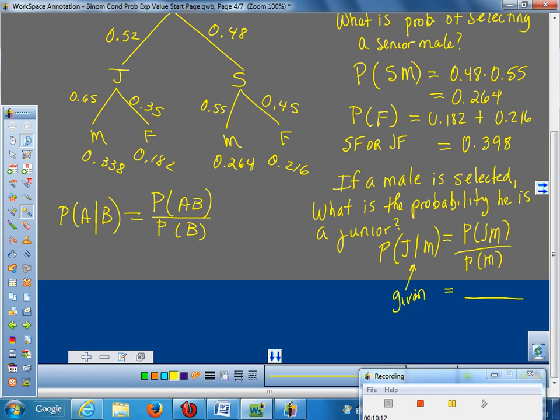In this case, a junior male, that's why I like having all my numbers across the bottom of the tree. Because, a junior male, I can come down here, a junior male's probability is 0.338. Now, how do I get all my males? You have to add up all the possible male groups, 0.338 plus 0.264. So, if you combine those, you get the final answer.